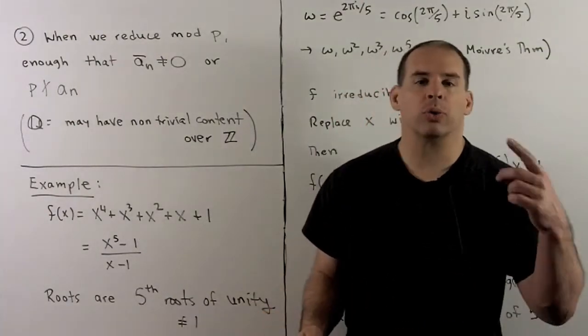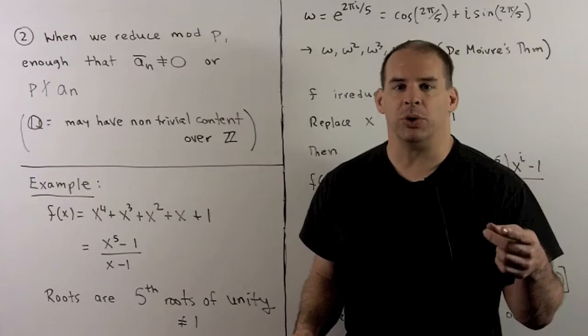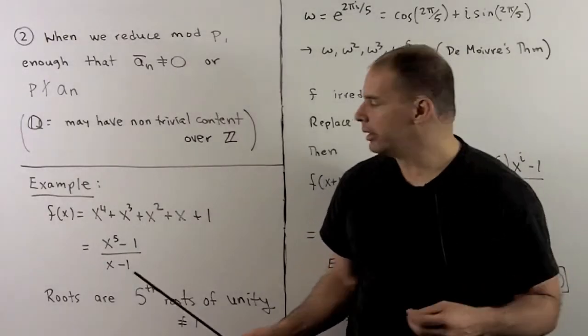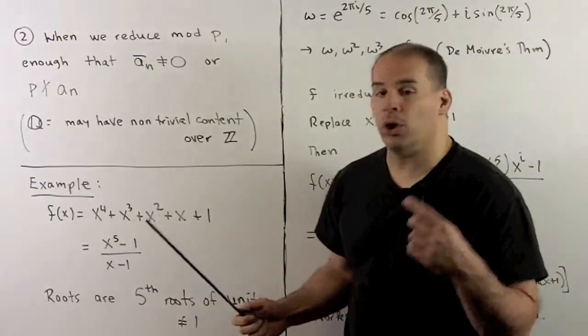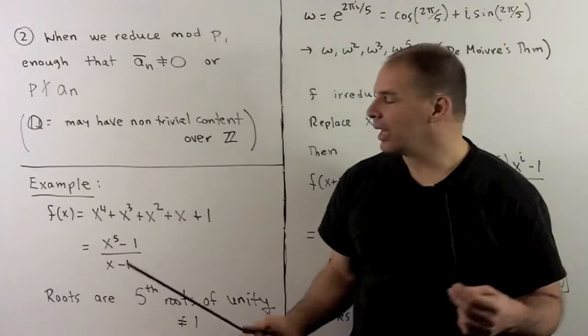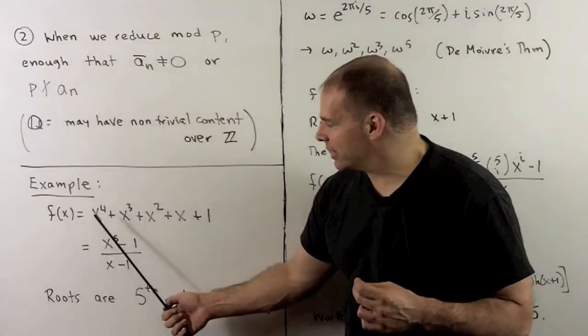So here, all the roots are going to be fifth roots of unity, excluding 1. So this polynomial has no real roots.